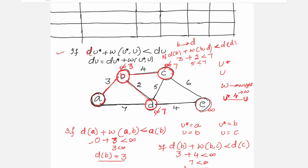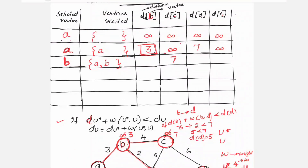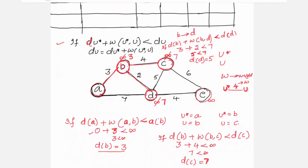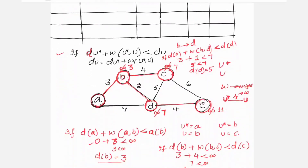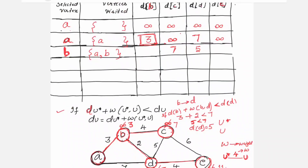Since 5 < 7, the distance to reach D is updated from 7 to 5. Next, for B to E: B to E is one more hop away, so it remains infinity. Out of {5, 7, infinity}, the minimum is 5.